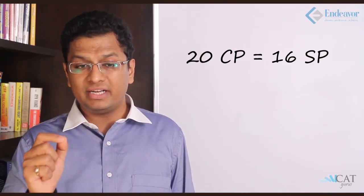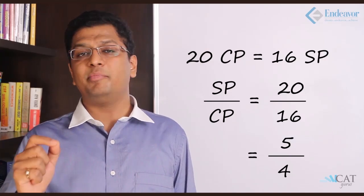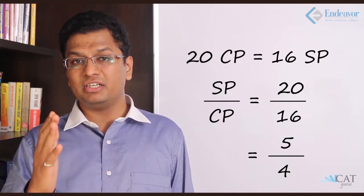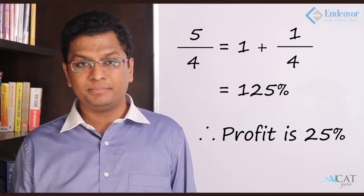If we find the ratio SP/CP, it's 20/16 = 5/4. Now 5/4 is SP/CP, so the percentage profit is 1 + 1/4 = 25%. Looks tough but it's a simple question.